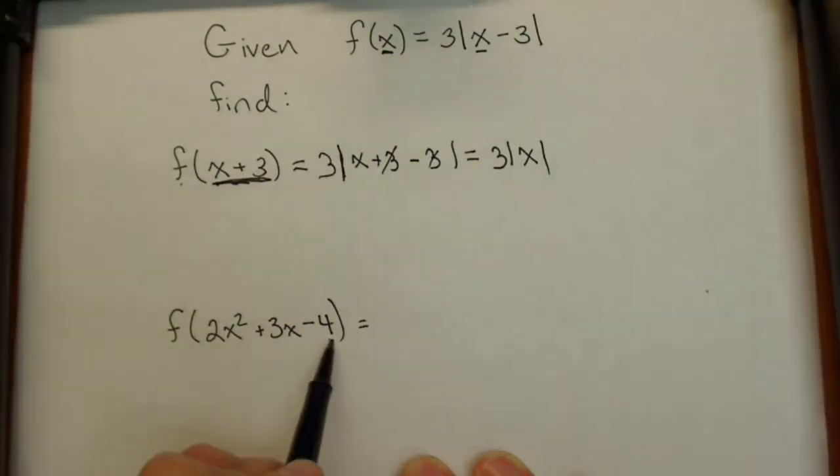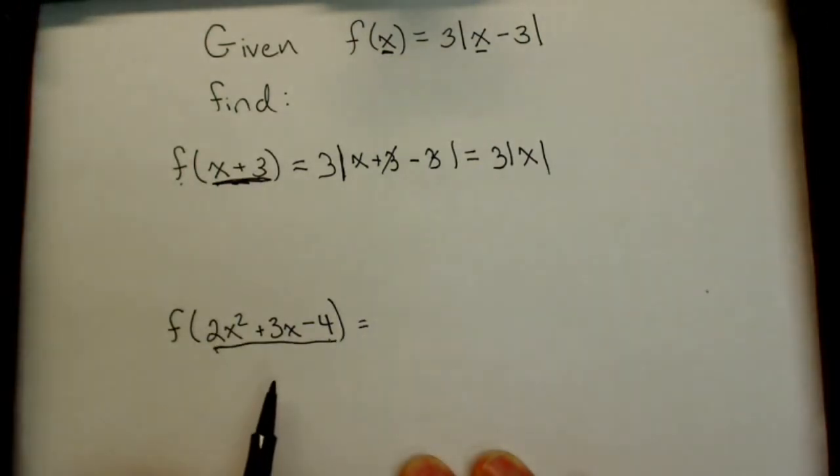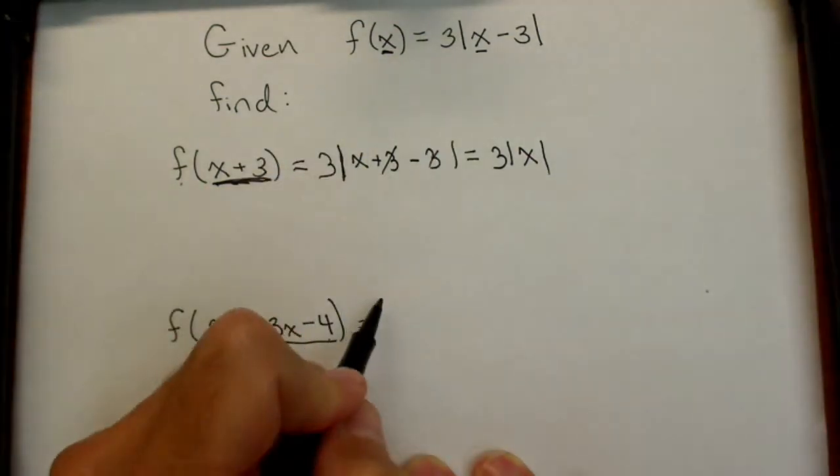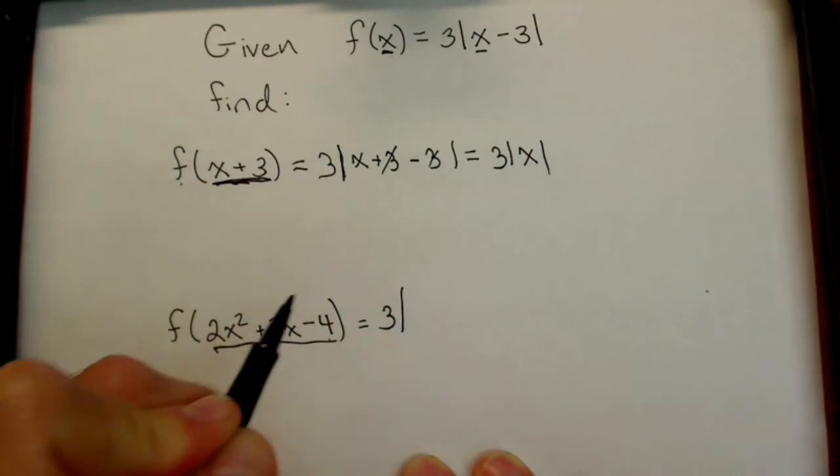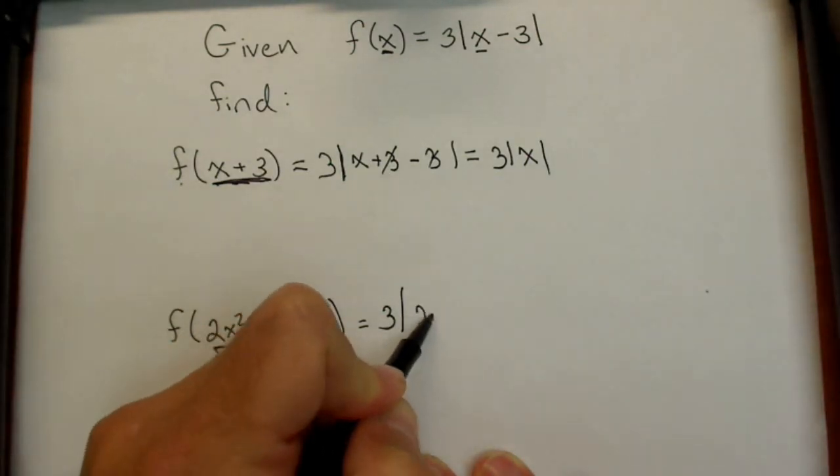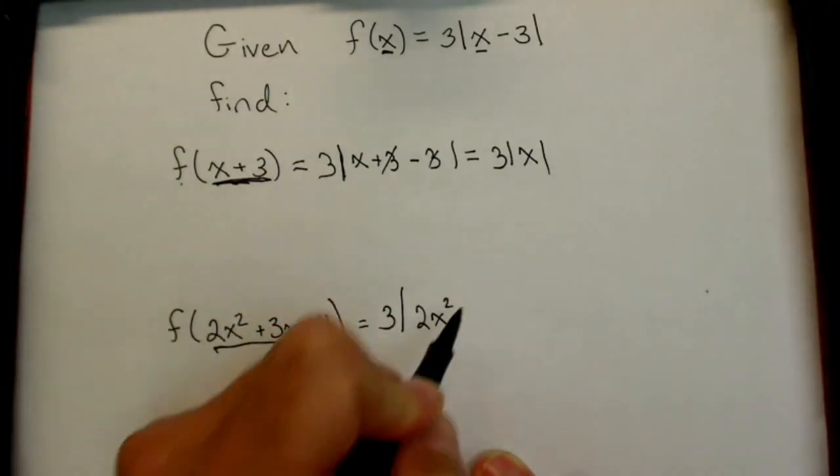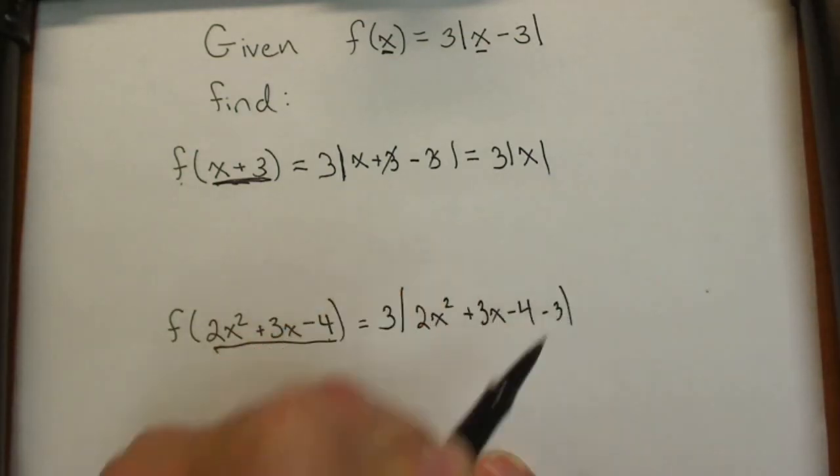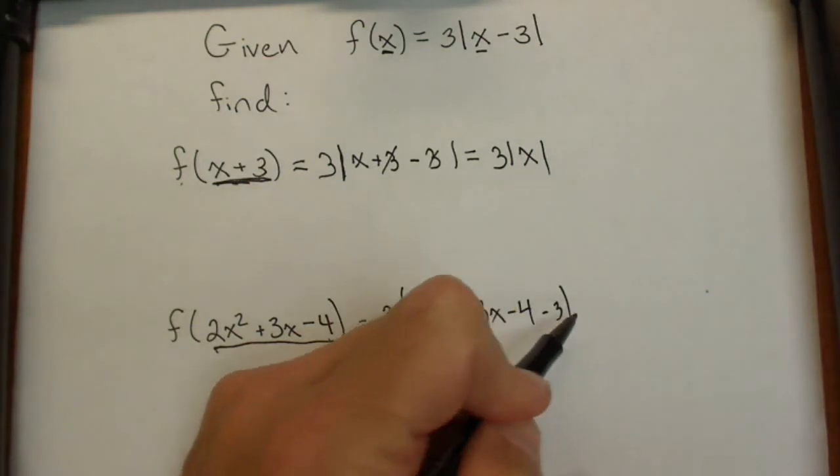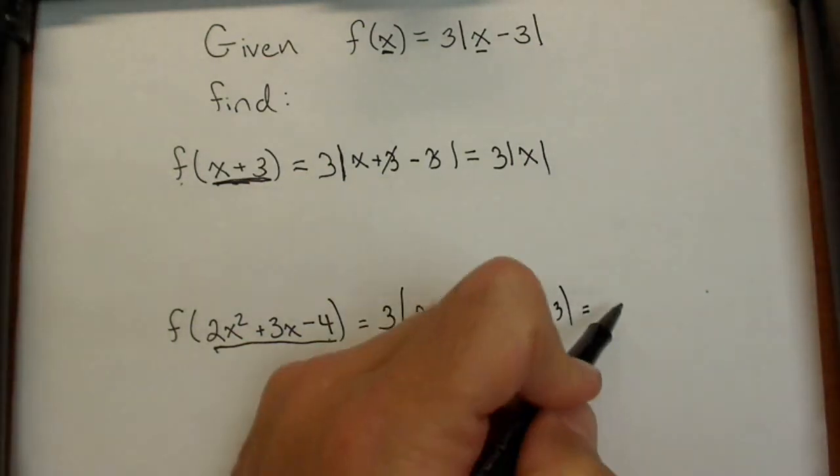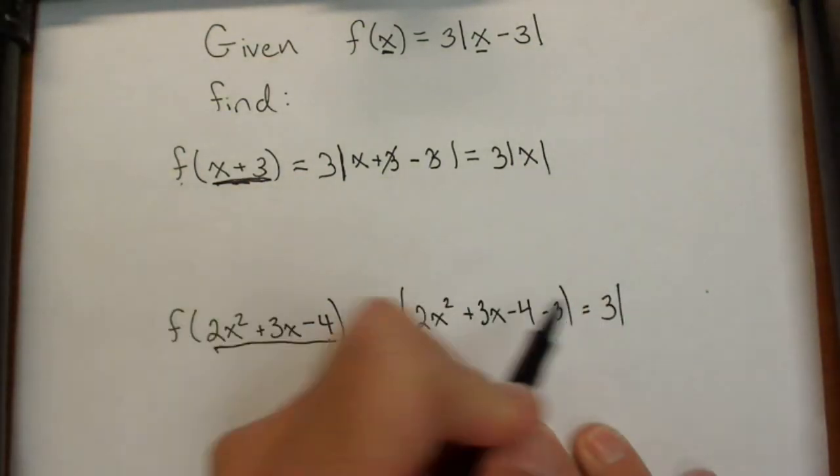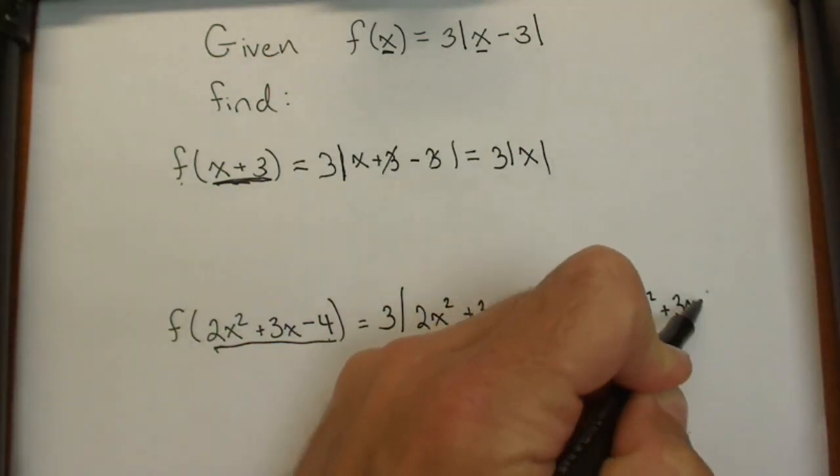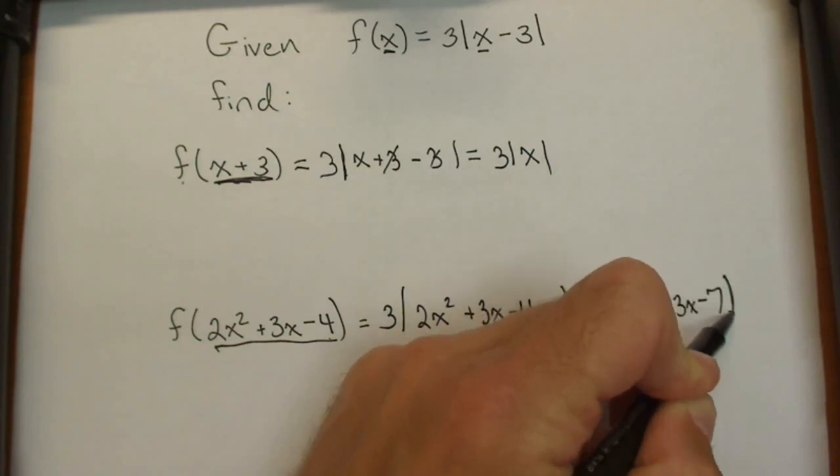The next problem is very similar. This is our input for our function, so we're going to put that in for x. So this one: three times the absolute value of 2x² + 3x - 4 - 3. Then we'll simplify to have three times the absolute value of 2x² + 3x - 7.